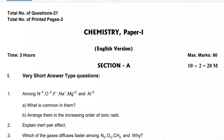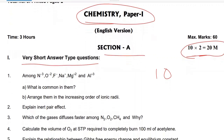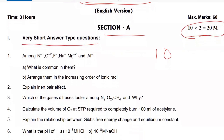Hi, hello everyone. My name is Anandriti. I present junior inter chemistry. First, section A — very short answers. Total marks: 10 questions, 2 marks each, 20 marks. This is a model paper check, just going over the very short answers.